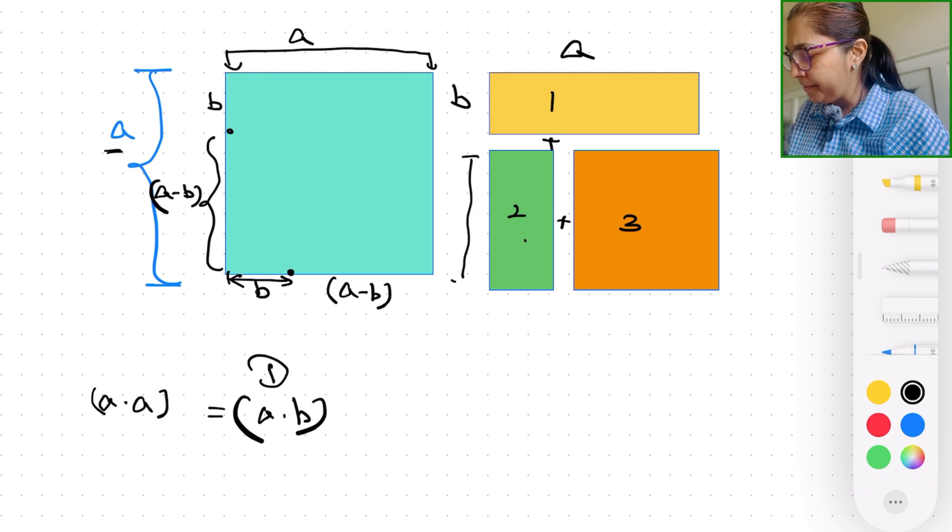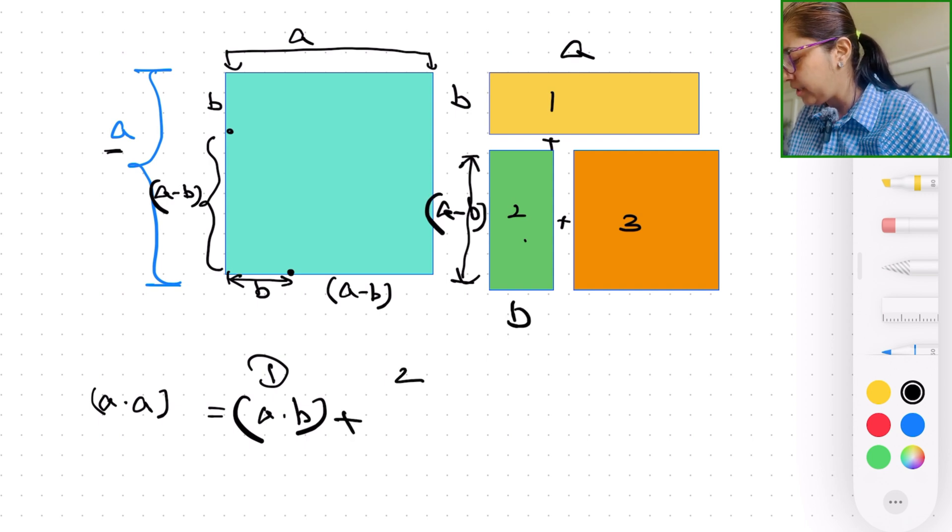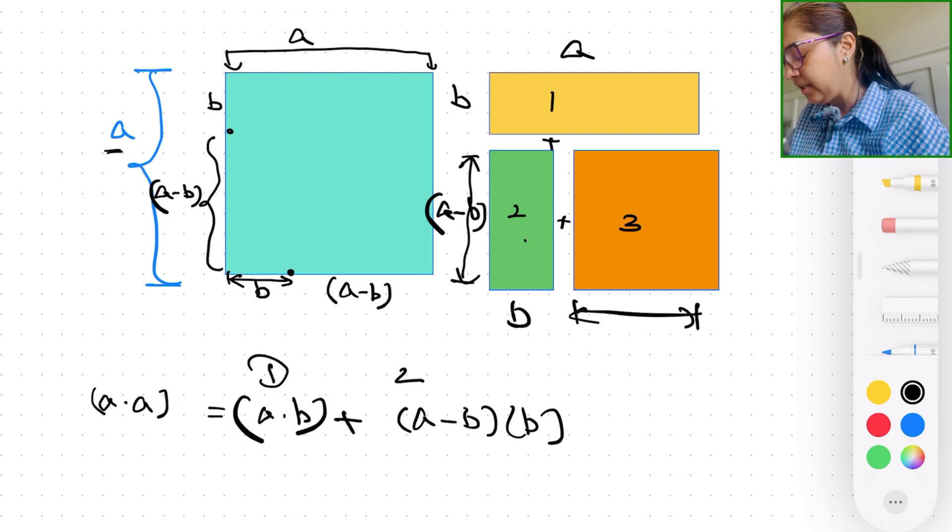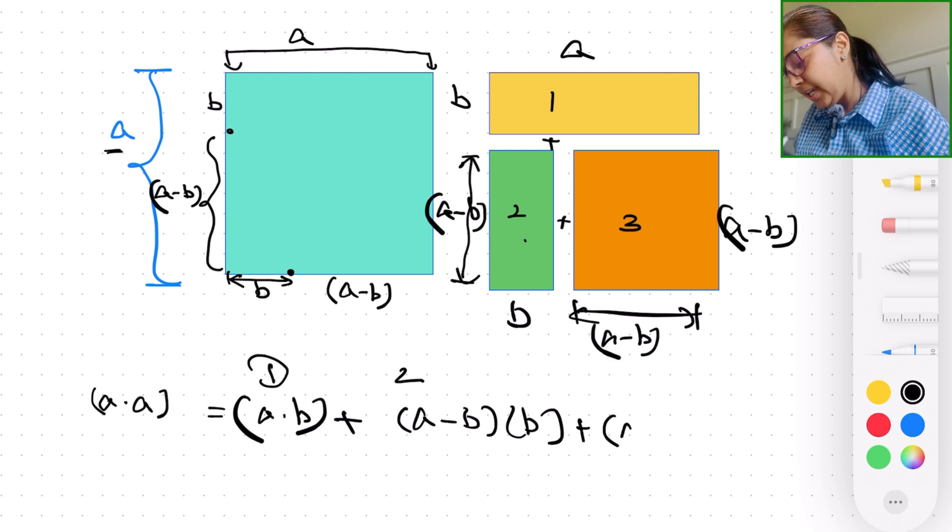this is going to be (a-b) with b plus for two, it is going to be (a-b) times b. And here we get a square in number three with the side length of (a-b) and (a-b), which is exactly the formula that we're trying to figure out.